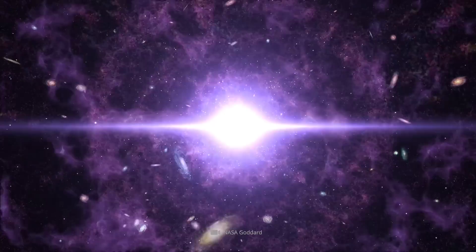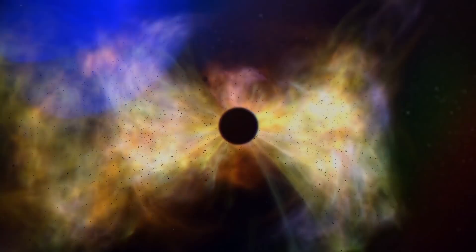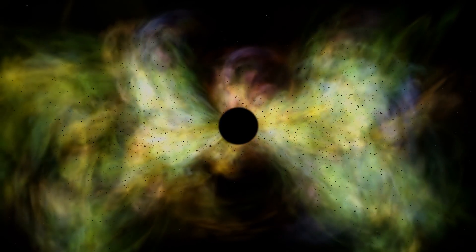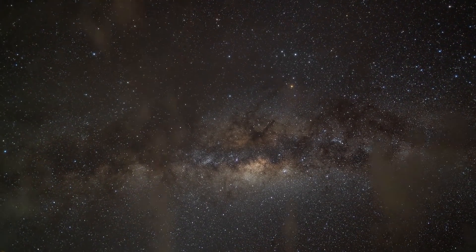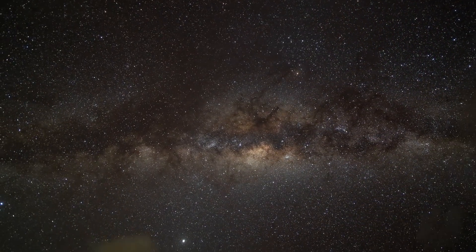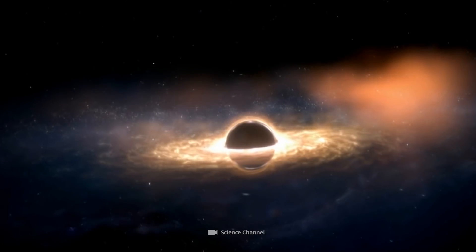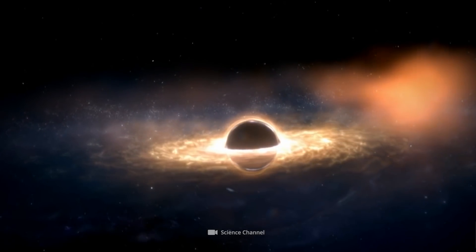If very small black holes existed at the Big Bang, the objects would have evaporated completely by now. The radiation emitted in the course of this process could therefore serve as characteristic evidence of such black holes. The problem? Such a radiation has not been detected so far.